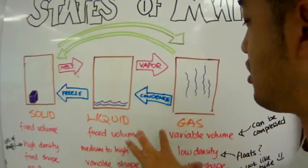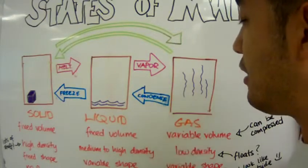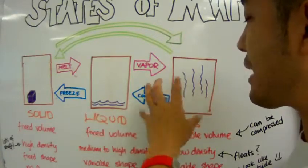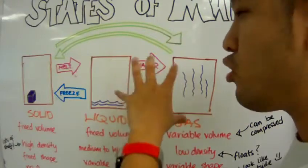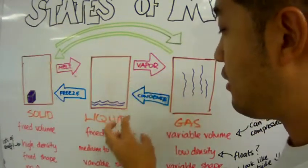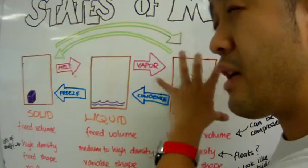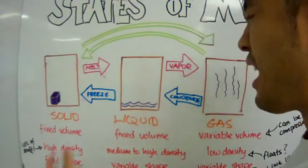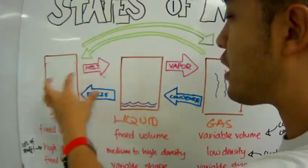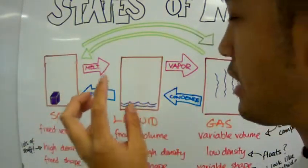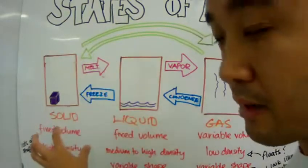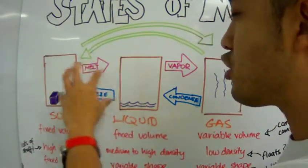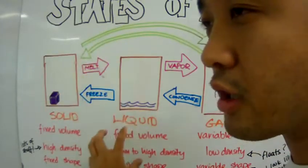What if you want to change gas back to solid? To go from gas to liquid, you condense — you remove energy from the gas and it will condense to liquid. Or if you put the gas in a very cold room, it will also condense to liquid. When you condense to liquid and remove more energy, it will freeze. It will freeze to become solid if it's water. If it's not water, we say it solidifies.